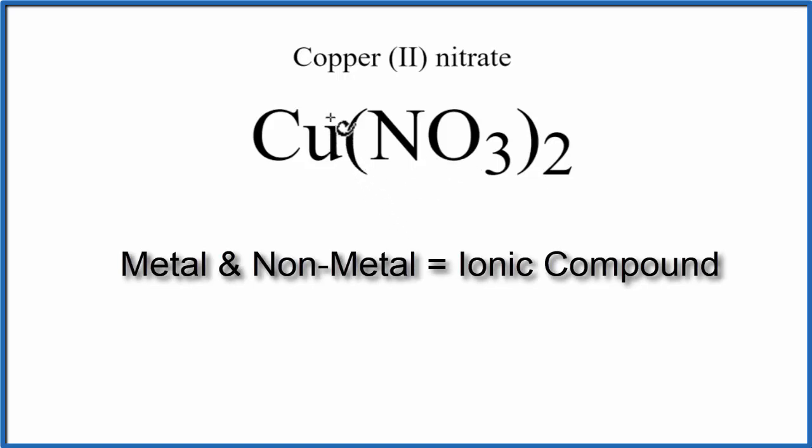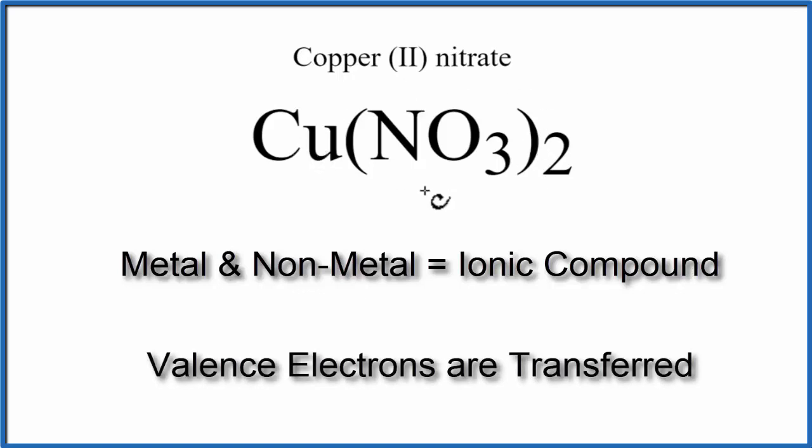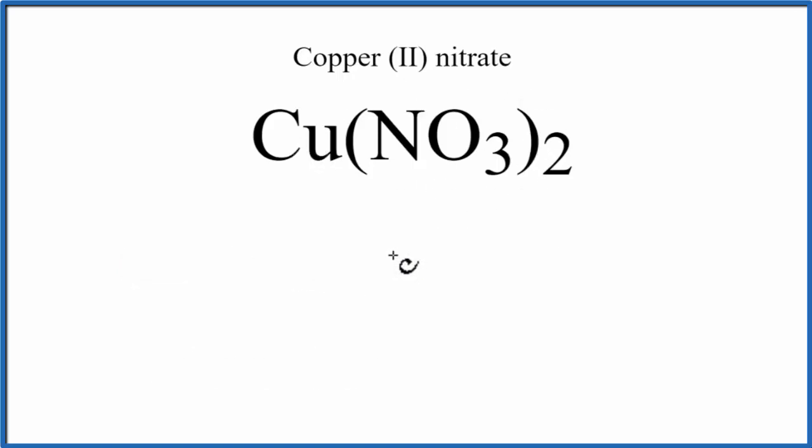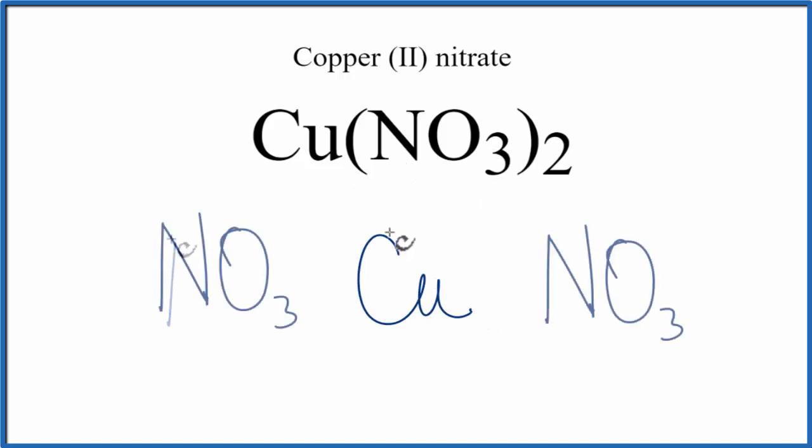In an ionic compound, the metal's going to transfer its valence electrons to the non-metals. So let's put Cu in the center, and then the NO3 on either side. We can tell that copper is going to have a 2 plus charge because of the Roman numerals in the name.